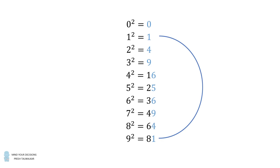1 squared and 9 squared both end in 1. 2 squared and 8 squared both end in 4. 3 squared and 7 squared both end in 9. And 4 squared and 6 squared both end in 6. The square of 0 ends in 0. That's different from all the other squares listed here.